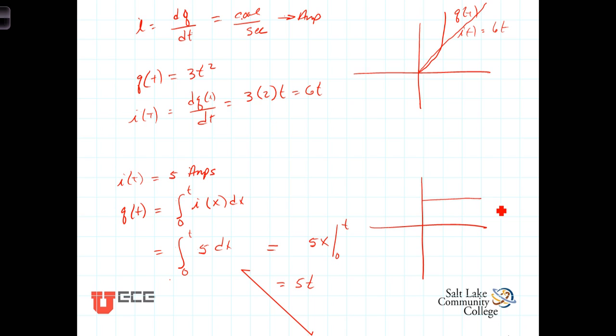So, the charge, then, is just adding up the electrons, or the Coulombs, as they flow. And we then get that I, or I'm sorry, Q of t would be a straight line, Q of t equals 5t, if I of t is a constant 5 amps.